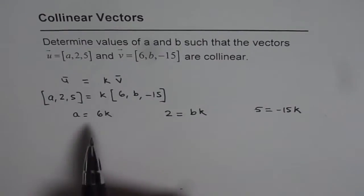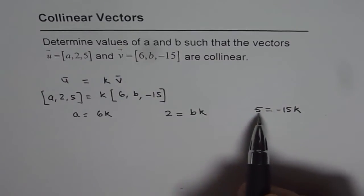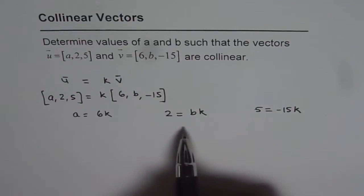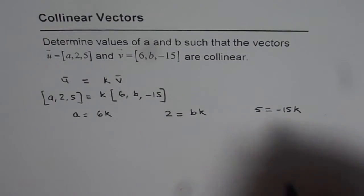So from here we can find the value of k. In this case both are known to us and will help us find the value of k. We can substitute this value in the previous two equations and then solve for the unknown a and b. So that is our strategy. Let's find the value of k from here.